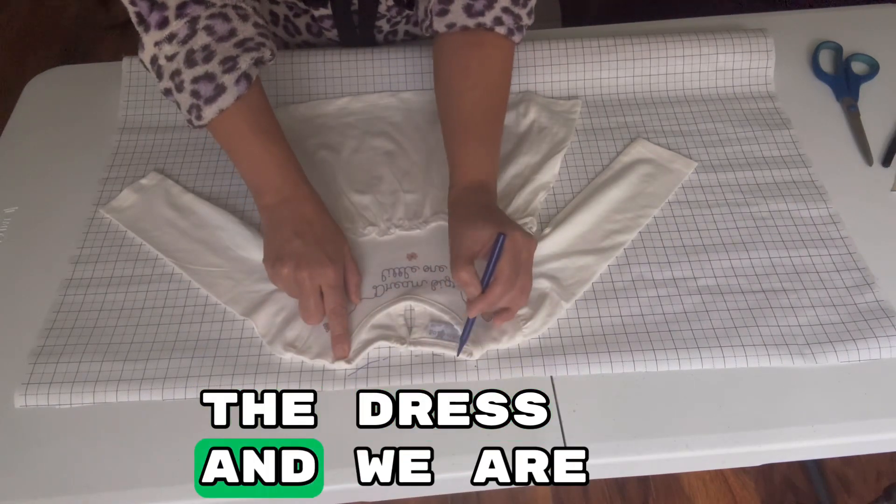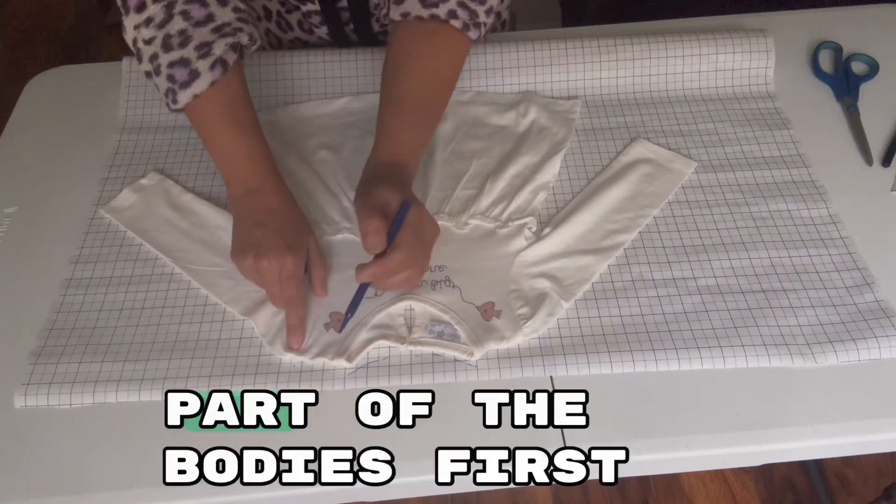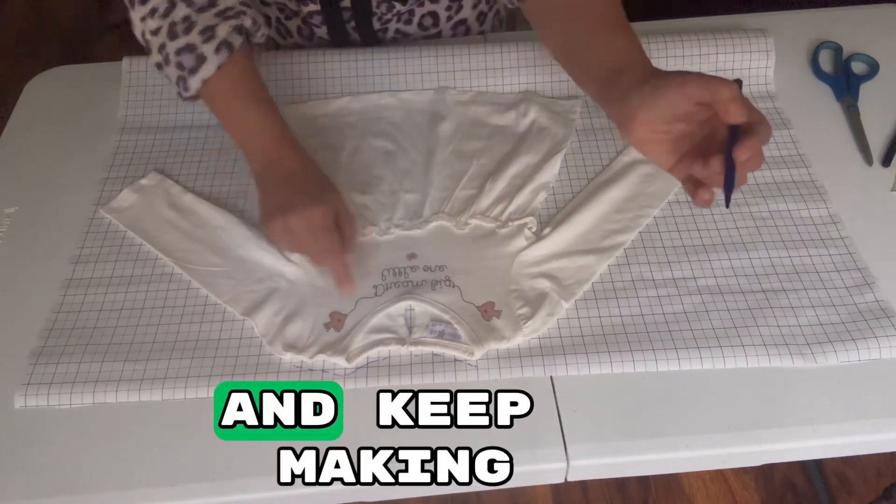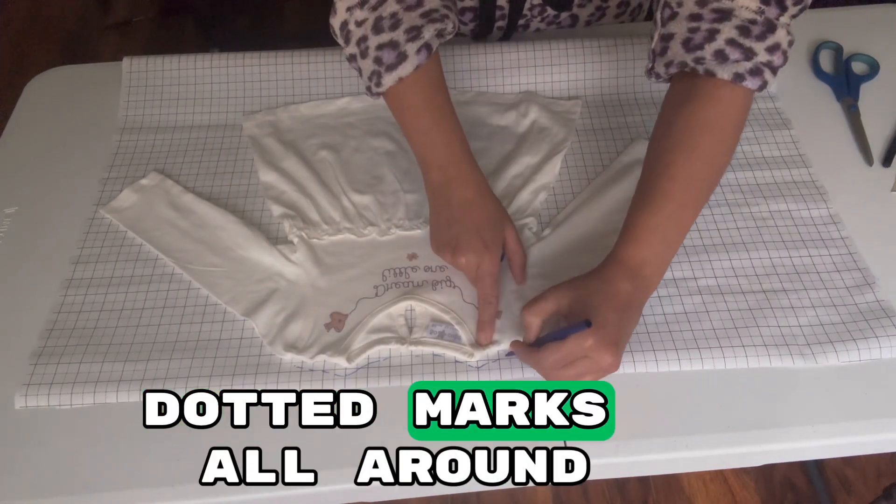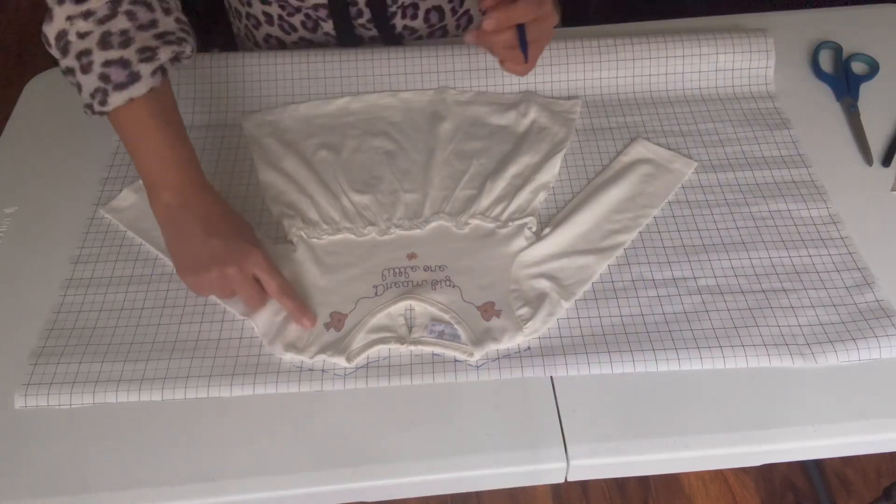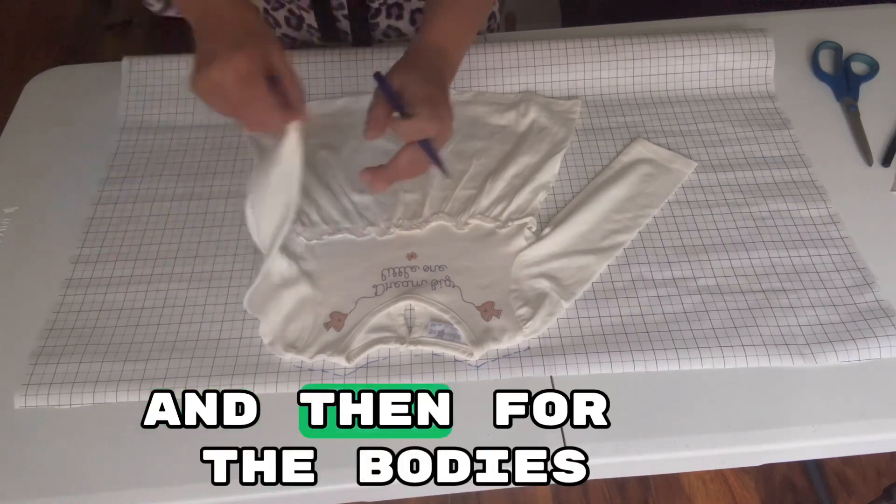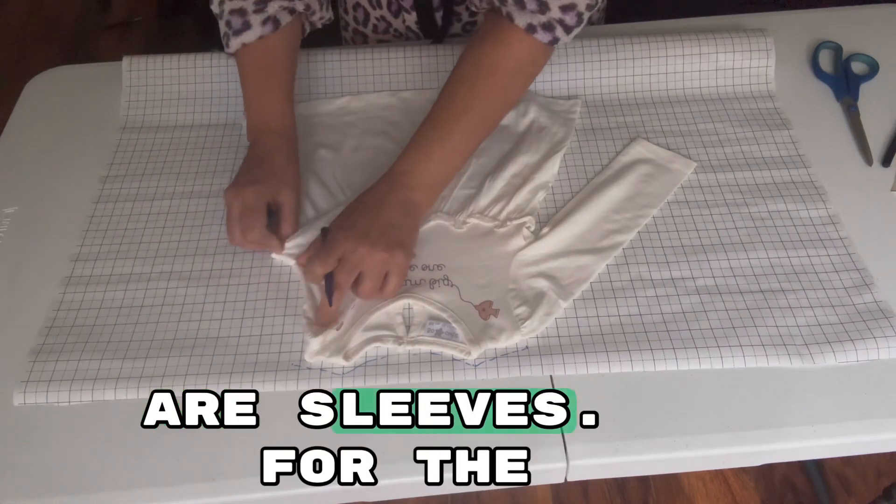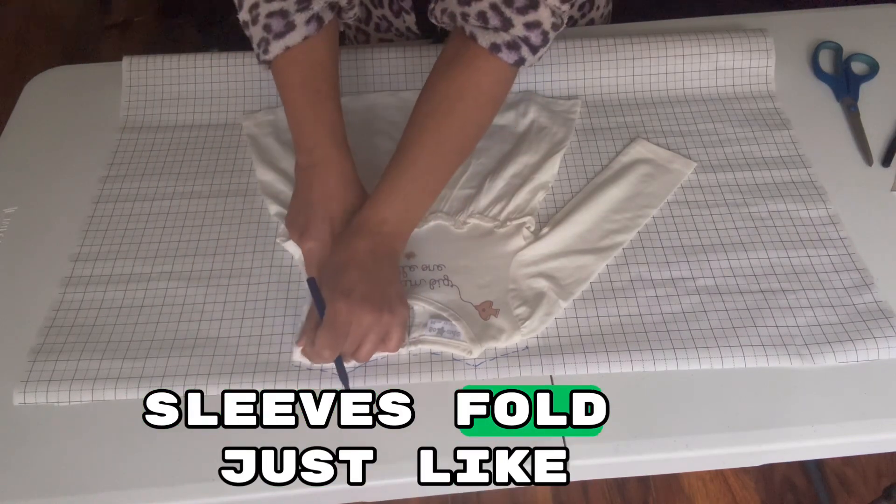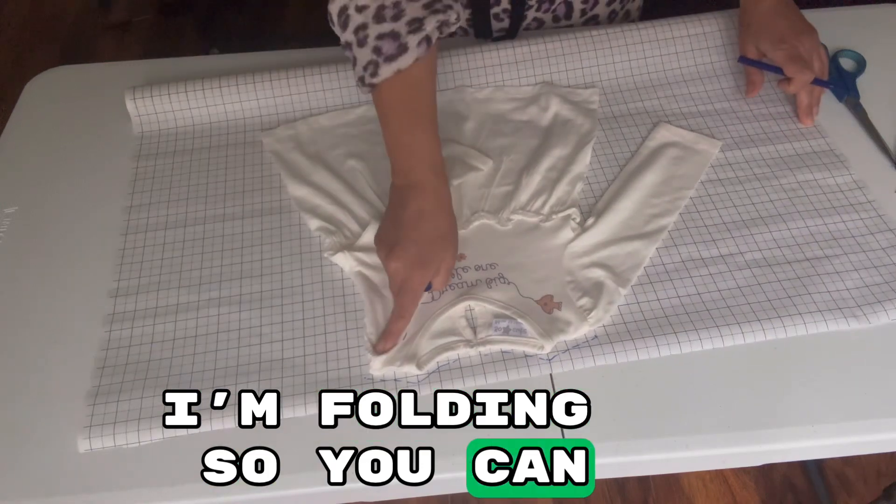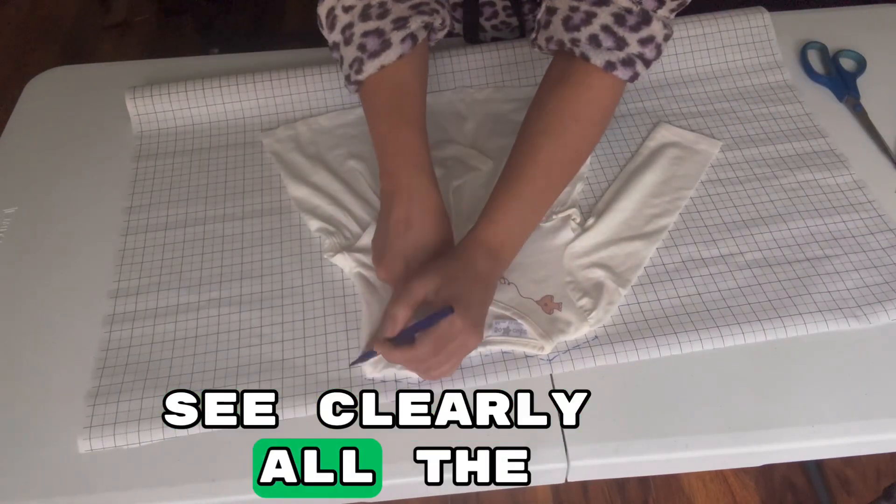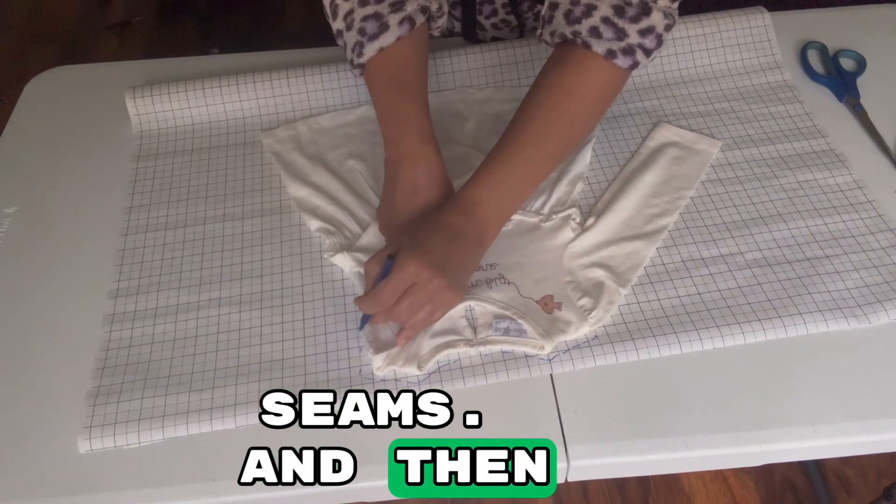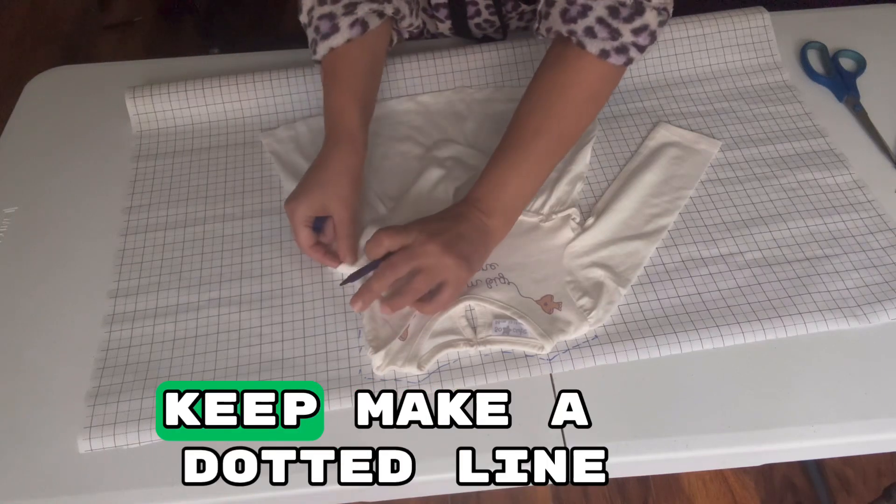Now simply place the dress. We are going to make the back part of the bodice first and keep making dotted marks all around. These are shoulders, then the bodice pattern, and these are sleeves. For the sleeves, fold just like I'm folding so you can see clearly all the seams, then keep marking and make a dotted line. Then we will draw on this line and simply cut it.